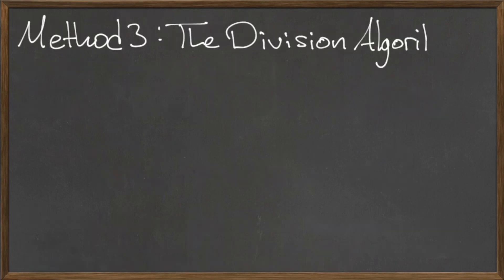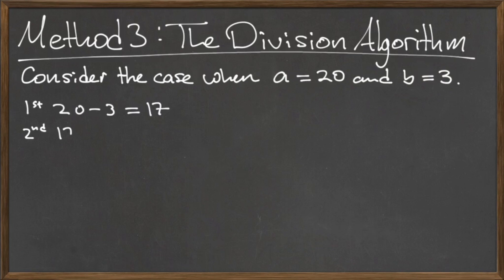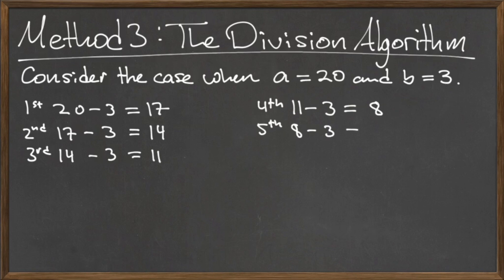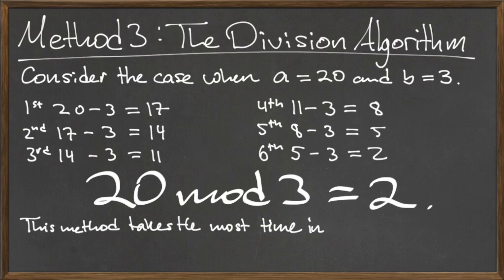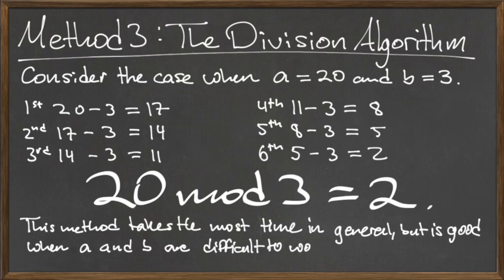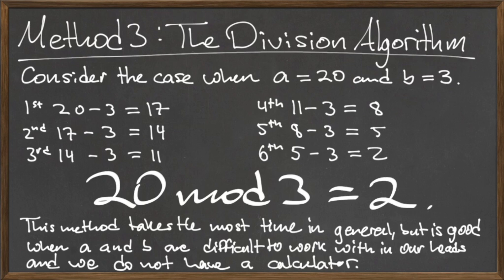The final method for calculating a mod b is the division algorithm, which we covered in a previous video. Let's use the same numbers, a equals 20 and b equals 3, to confirm that the division algorithm also returns the same answer. Remember that the division algorithm returns the quotient and the remainder; however, since we're trying to find a mod b, we only care about the remainder. We will track the values of r as the loop is repeated successively. With these numbers, the loop must be repeated 6 times before the stopping condition is met, at which point r equals 2 is returned for the remainder. Since the remainder and a mod b are the same, 20 mod 3 is equal to 2. While this method takes more time than the previous two, it may be more efficient if a and b are large or we do not have a calculator to use for long division.